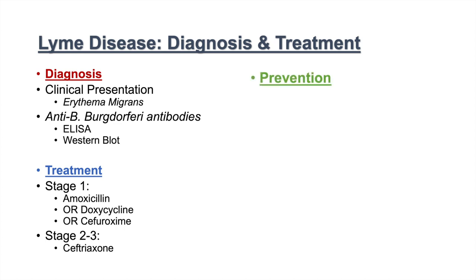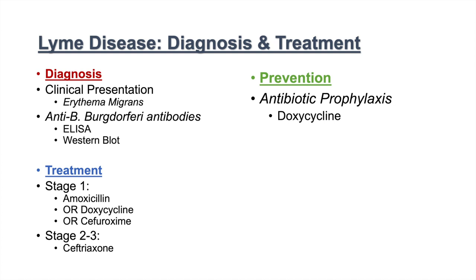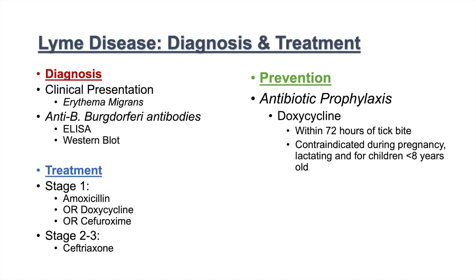For prevention of Lyme disease, we want to take care to ensure there are no tick bites. But if there are tick bites, we want to use antibiotic prophylactic treatment, which is normally doxycycline, used within 72 hours of a tick bite. However, doxycycline is contraindicated during pregnancy, for lactating women, and for children under eight years old.